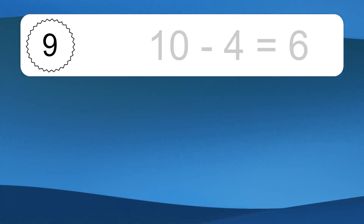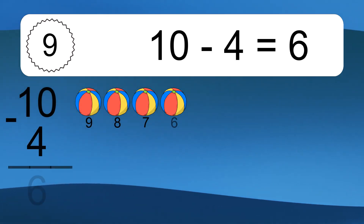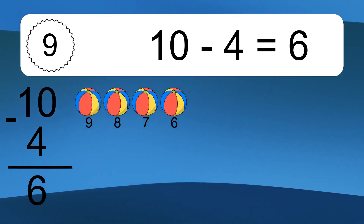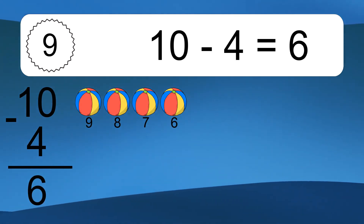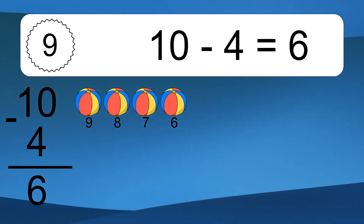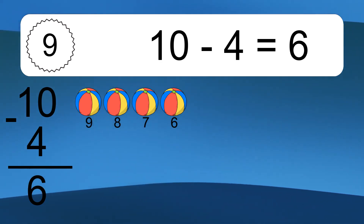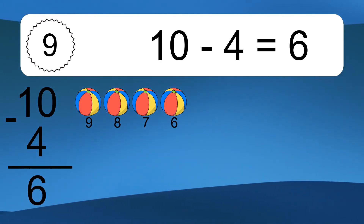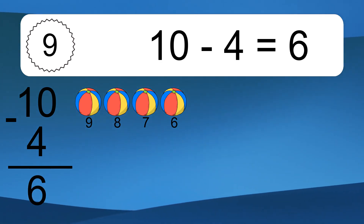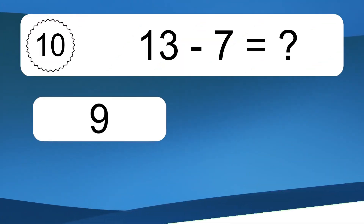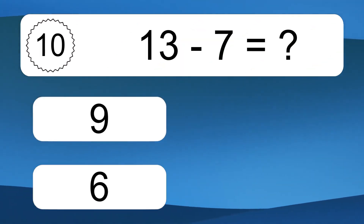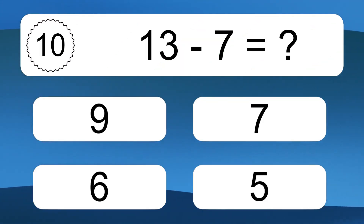10 minus 4 equals what? 10 minus 4 equals 6. Let's count it. 9, 8, 7, 6.